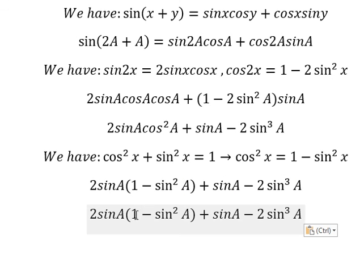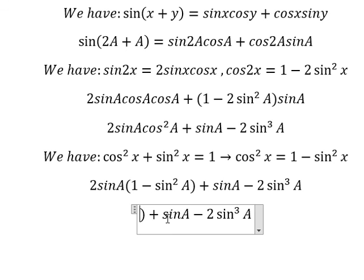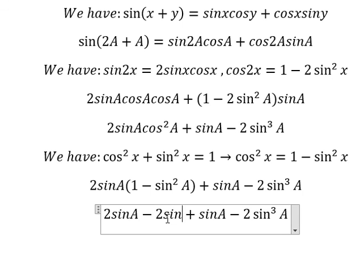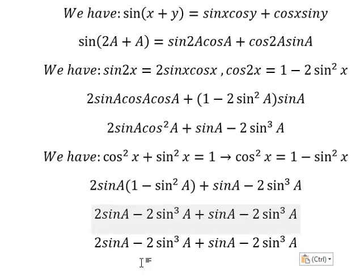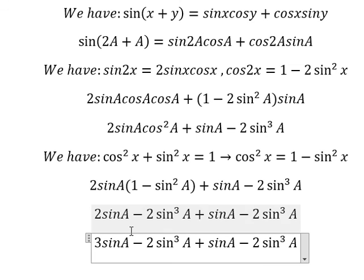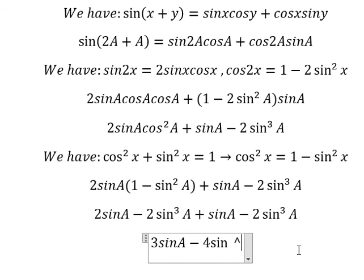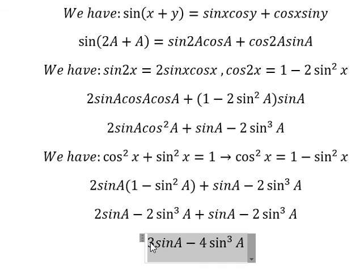We now have 2sin(a) times 1 minus sin²(a), plus 1 minus 2sin²(a) times sin(a). We simplify: 2sin(a) and sin(a) give us 3, then negative 2 and negative 2 give us negative 4. The final answer is 3sin(a) minus 4sin³(a).